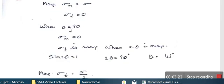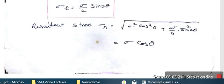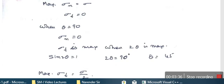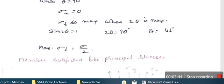Similarly, when theta is 90 degrees, substituting in sigma_n: cos 90 is 0, so sigma_n equals 0. Similarly, sigma_t is maximum. When sin 2 theta equals 1, sigma_t equals sigma by 2. That is, sin 2 theta equal to 1 means 2 theta is 90 degrees, or theta is 45 degrees.